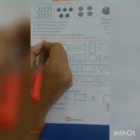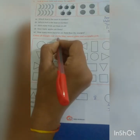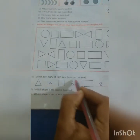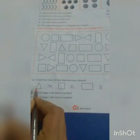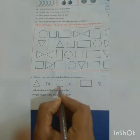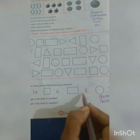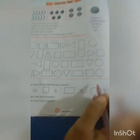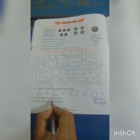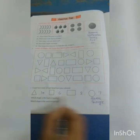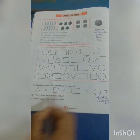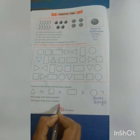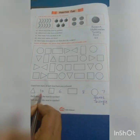Second: color all triangles red, circles blue, squares green, and rectangles pink. A: Count how many of each kind you colored — triangle 10, square 6, rectangle 8, circle 7. B: Which shape is the least in number? Square. Which shape is the most in number? Triangle.